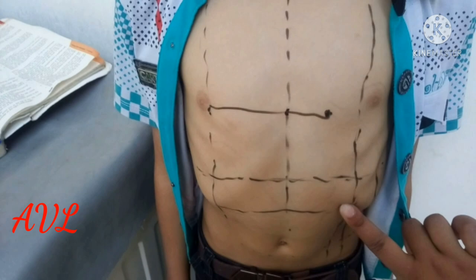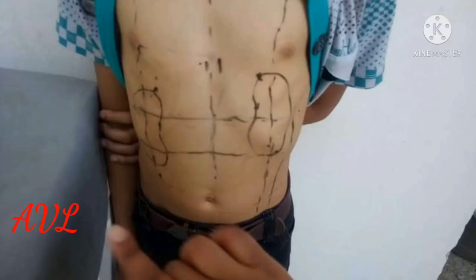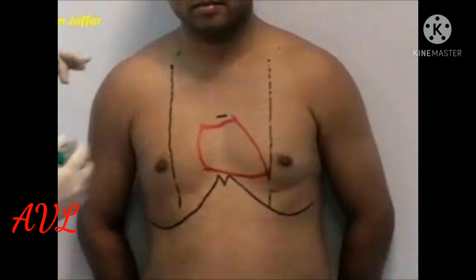In the surface anatomy method, internal structures of the body are studied by marking them on the surface of the cadaver or palpating them on the surface of the body, such as the liver, kidney, and heart.